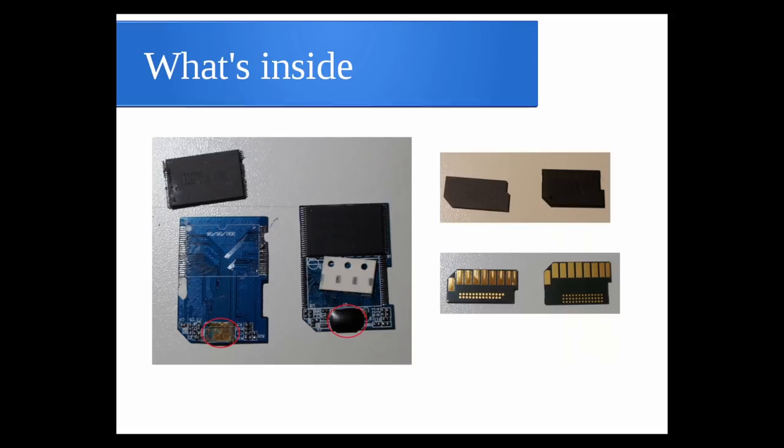On monolithic cards, the back side has a set of test points — little gold dots. Put an oscilloscope on them and watch the card boot: you can identify the ALE, CLE, write-enable, chip-enable, and data pins for the flash inside. There's also a set of pins that look suspiciously like JTAG pins for the controller.